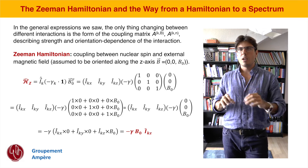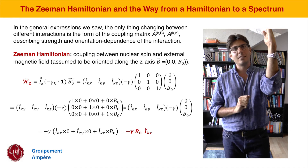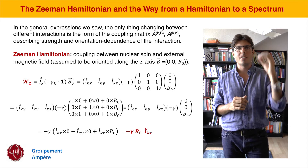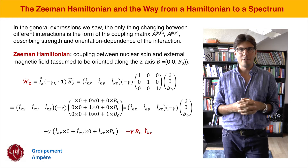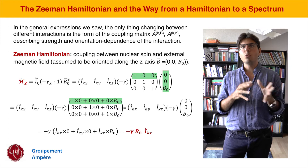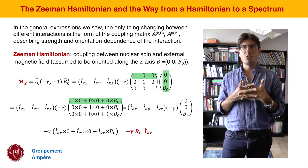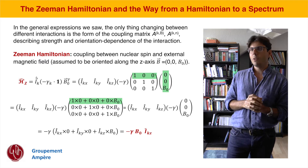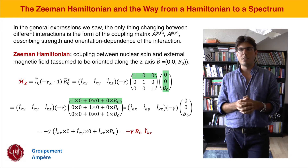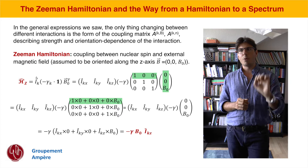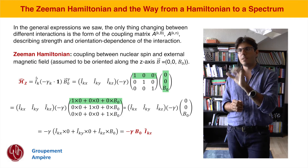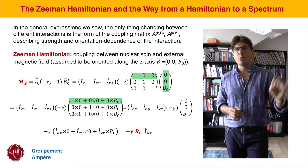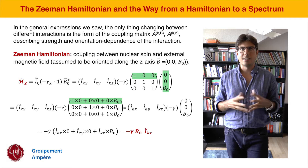We assume that our B0 field is oriented along the z-axis, meaning it has no x or y component, so it's just a (0, 0, B0) vector. We perform the matrix multiplication: starting from the first row of the identity matrix (1, 0, 0) multiplied by (0, 0, B0), we take the sum of each component — 1×0 + 0×0 + 0×B0 — giving us zero as the first entry of our resulting vector.